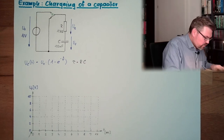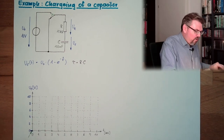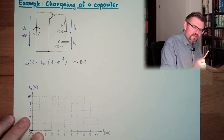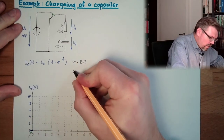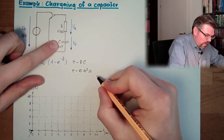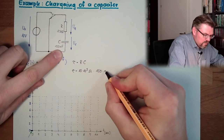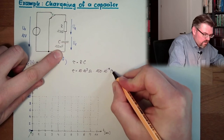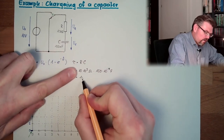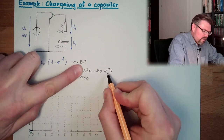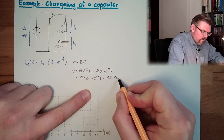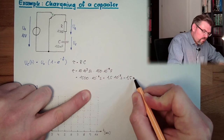Before switching, everything was zero — the voltage was zero. Now we want to know how this looks. We know it follows this function, so we need tau. In our case, we have 10 kilohms multiplied by 150 nanofarads. So this is 10 times 150 equals 1,500, and combining the exponents (10^3 × 10^-9) gives 10^-3 seconds — so this is 1.5 milliseconds.